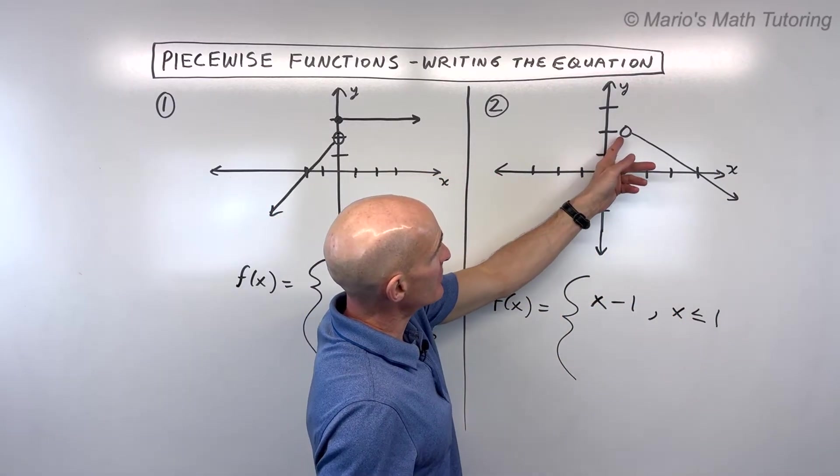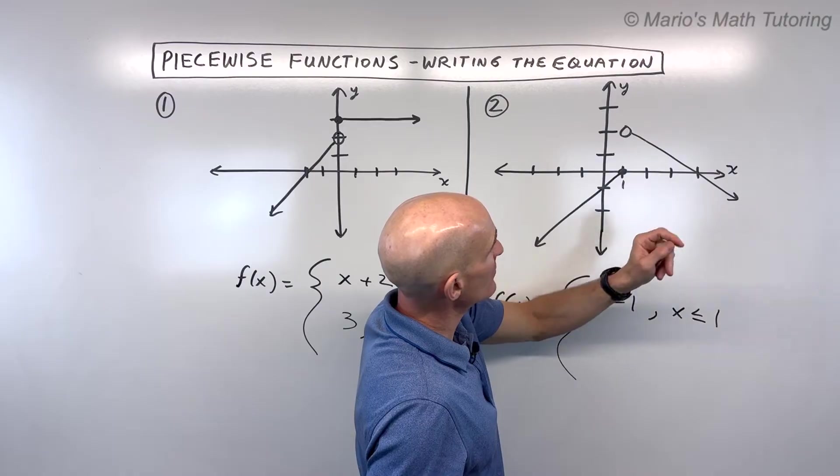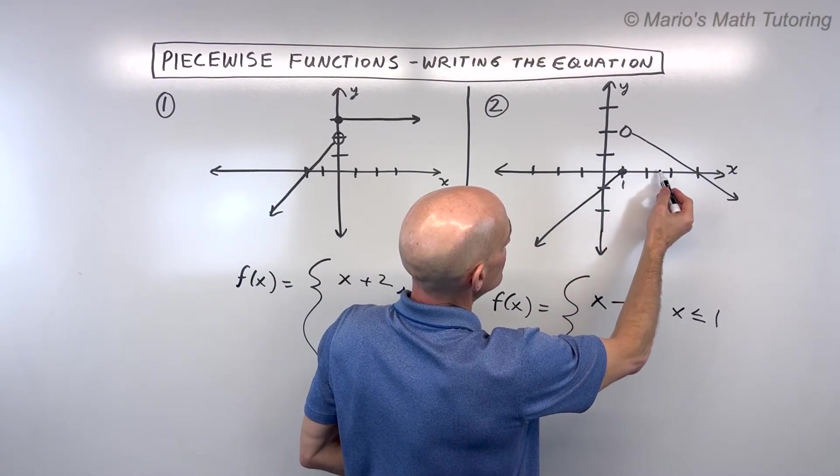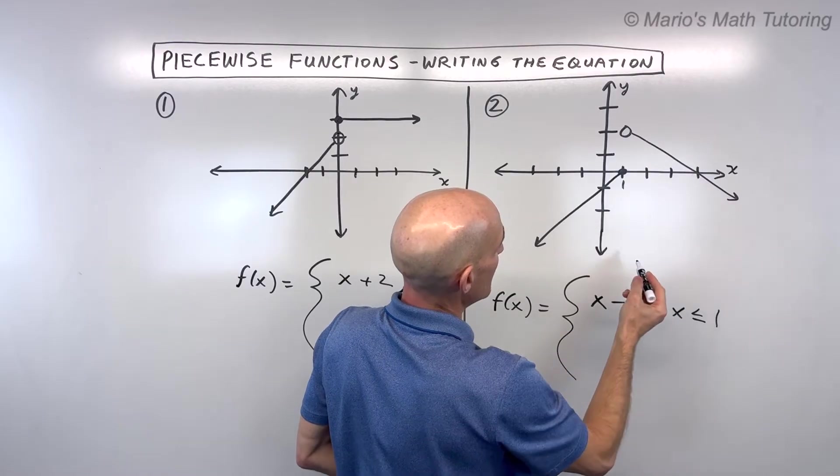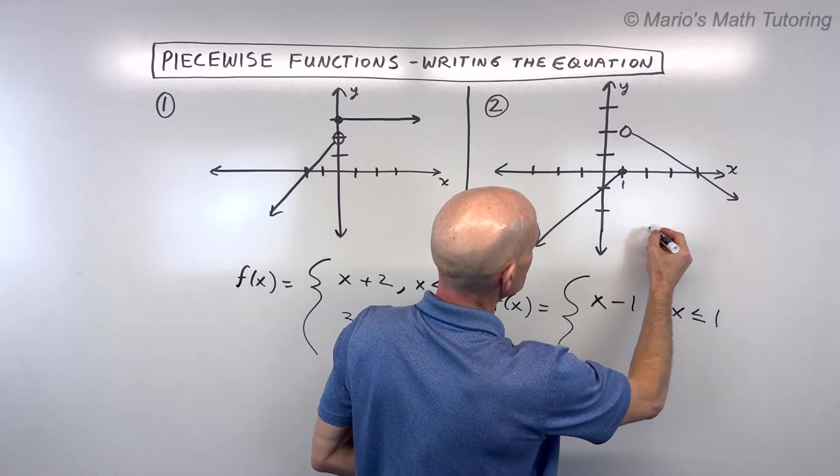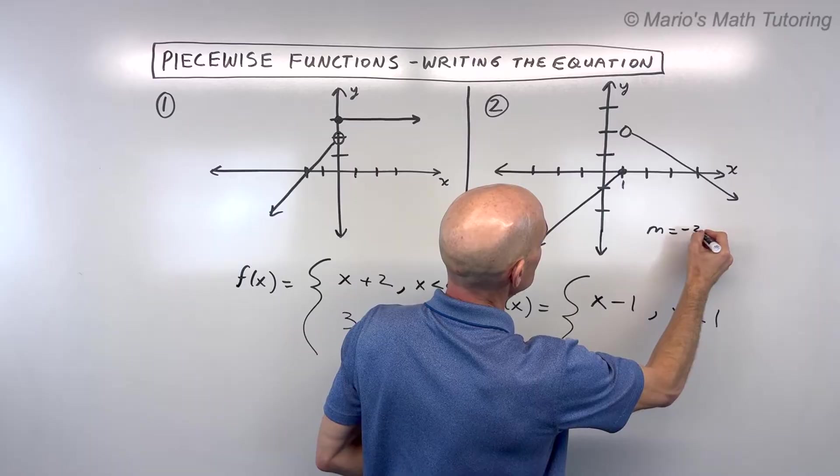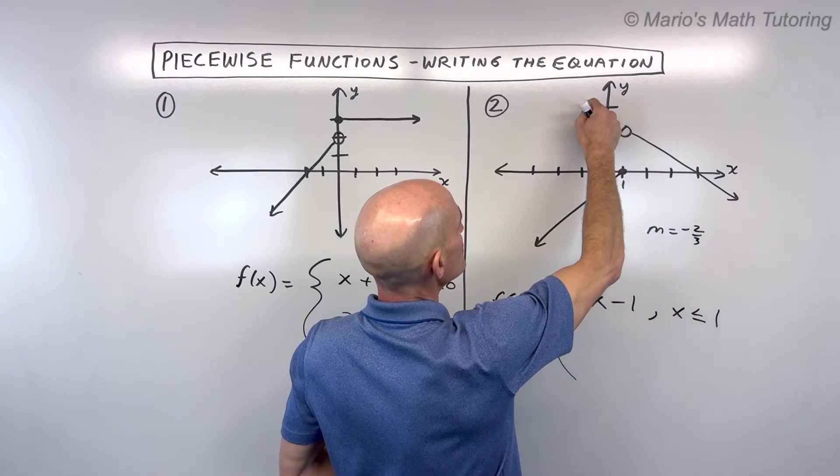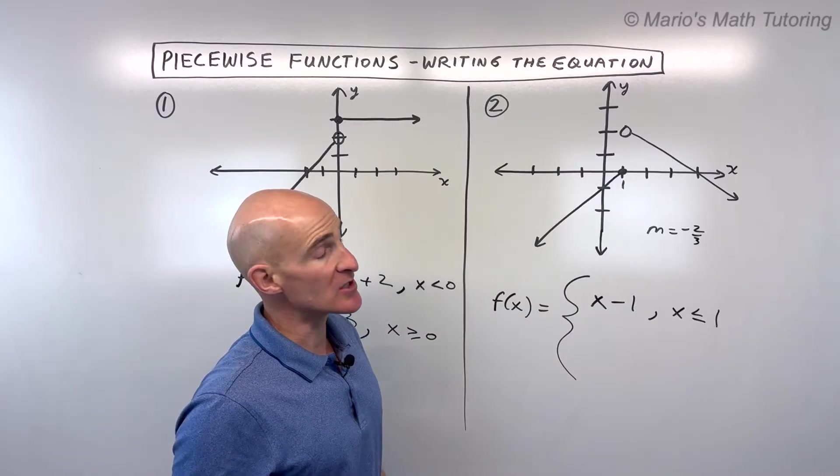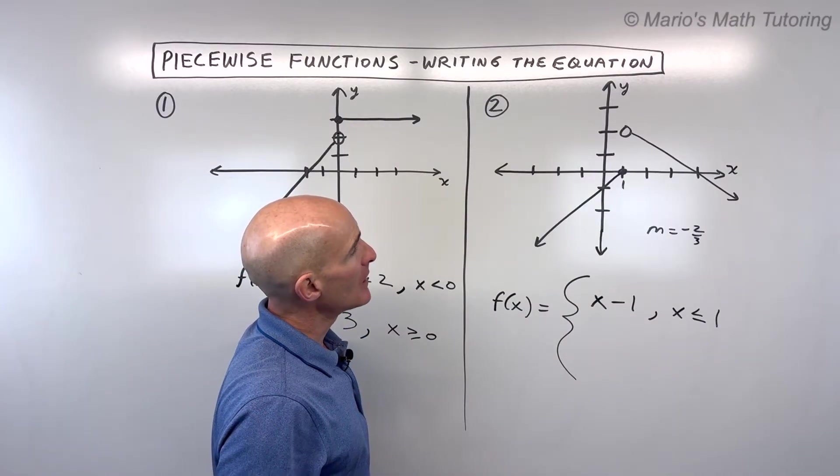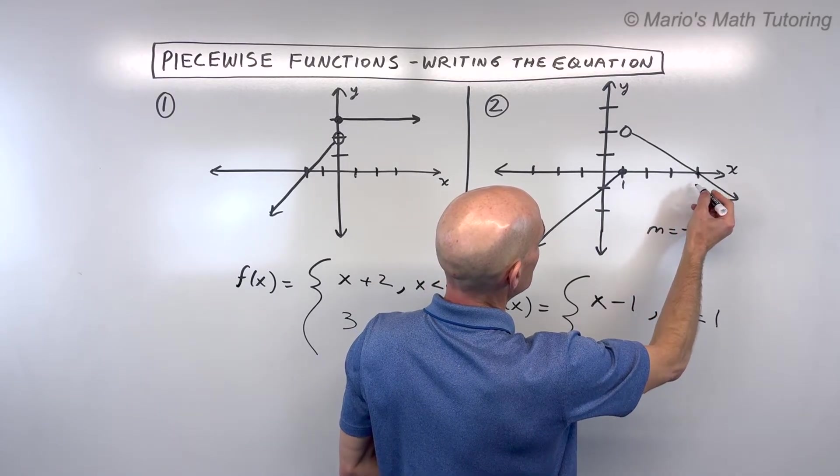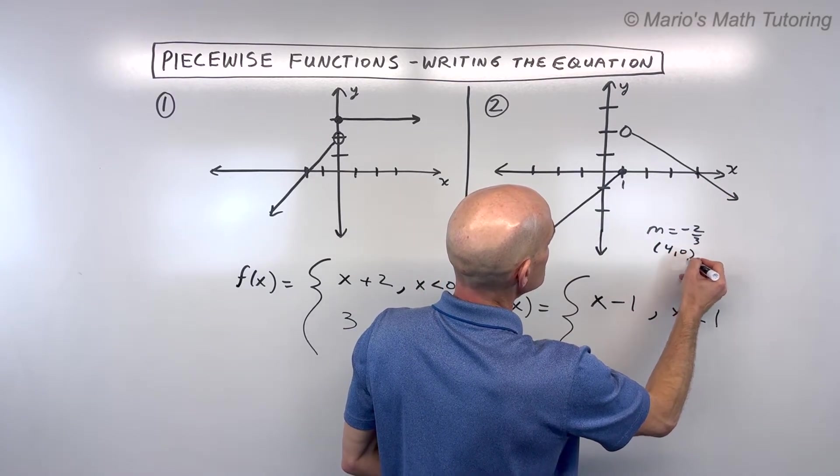Now for the second part here, this line, this one's a little bit more challenging. We've got a slope of down 2 over 3, that's a negative 2/3 slope. Let's write that down. So slope equals negative 2/3, but we don't know what the y-intercept is. It looks like it's going to cross somewhere between 2 and 3. So how do we find that y-intercept? Well, we could pick a point that's on the line. It looks like this goes right through (4, 0). So let's write our point here: (4, 0).